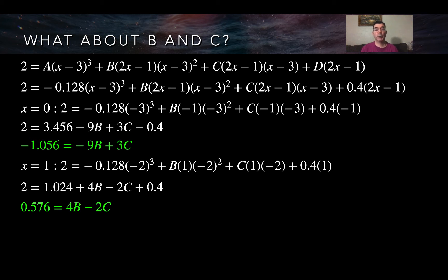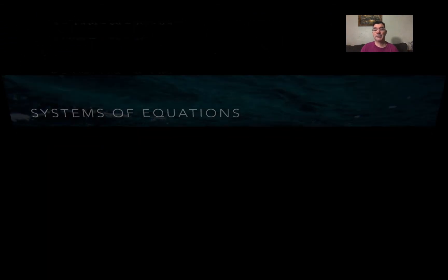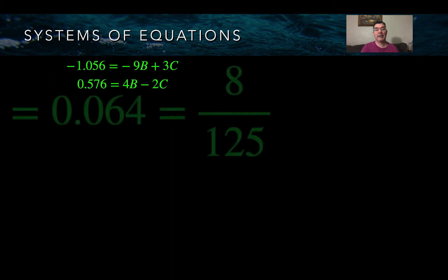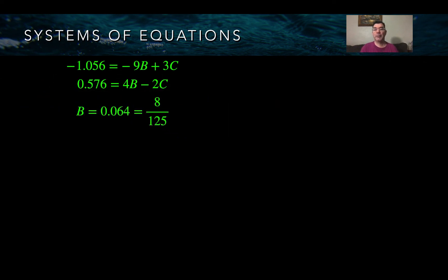I go back to systems of equations — two equations with two unknowns — and solve using whatever method you prefer, whether a calculator or by hand. The result is that B equals 0.064, which is 8 over 125, and C equals negative 0.16, which is negative 4 over 25.